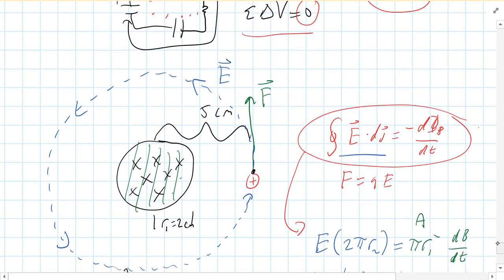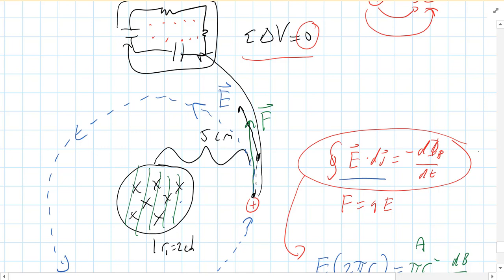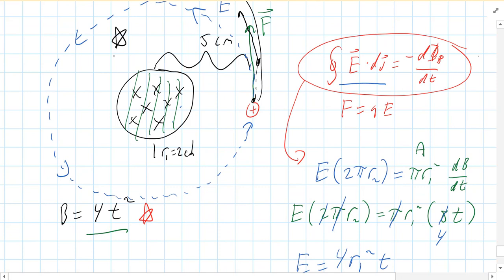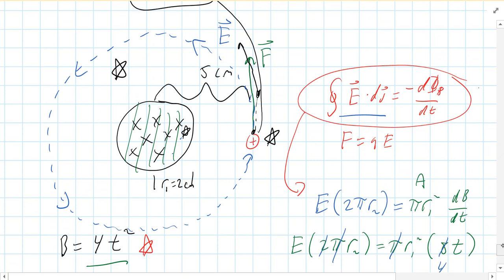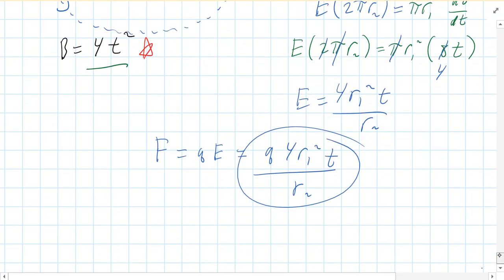So that proton — when you change the magnetic flux in that circle — the force on it at this moment is directed upward with that magnitude. The proton would start moving, and as it moves, the force direction rotates with it, so it would follow some kind of outward spiral. If this were an electron, it would go the opposite — clockwise. But in either case, there doesn't need to be a conductor there. This electric field exists as long as the magnetic flux is changing, and any charge you put in that region will experience a force. That's how you create an electric force on a charge using a magnetic field. I hope that was helpful — thank you very much.